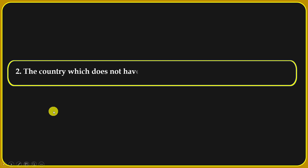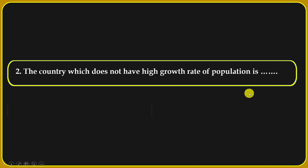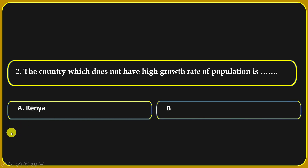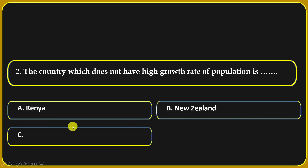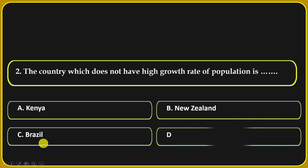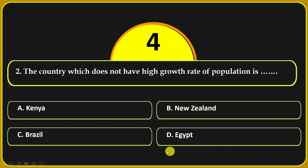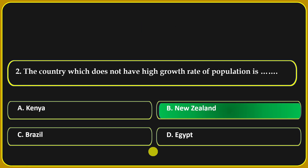The country which does not have a high growth rate of population is: Kenya, New Zealand, Brazil, or Egypt. New Zealand is the correct answer.